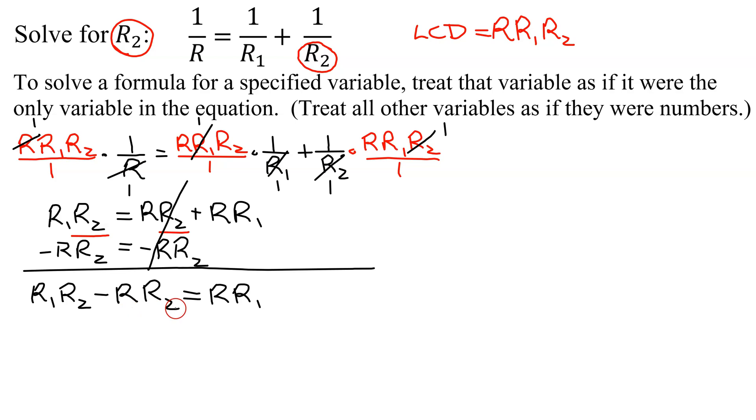Now, the only way to get R2 by itself is to factor it out of this expression. So I'm going to factor out my R2. Factor an R2 out of an R1, R2. The only thing left is R1. Minus, factor an R2 out of an RR2. The only thing left is R. Now, how is this expression, in parentheses, attached to R2? By multiplication. So you're going to get rid of it by dividing both sides by R1 minus R.